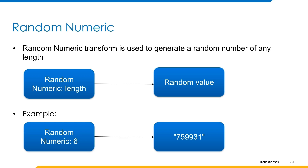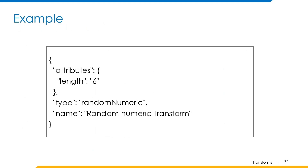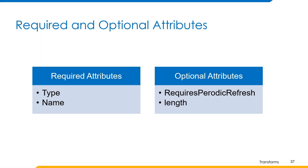Now let's understand how to build a transform using this operation. The example can be built in this format where the name is random numeric transform, type is random numeric, and the length is 6 — so we will receive a random numeric string of length 6 as output. The required attributes are type and name. The optional attributes are requires periodic refresh and length.